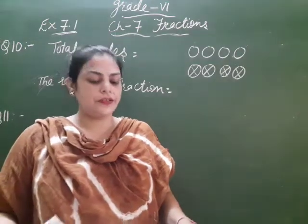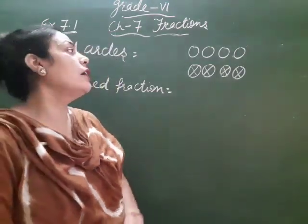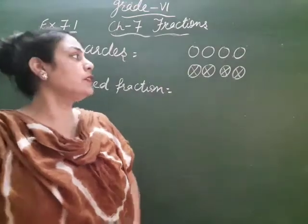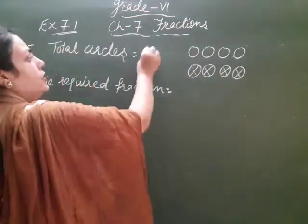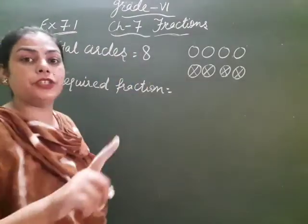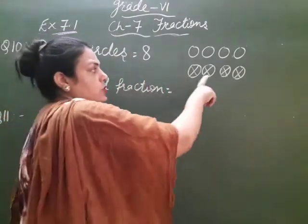Our 10th question is, write the fraction of the circles that have cross in them. You have given the picture. Where are these circles? Total circles are 8. So you have to write the fraction of the circles which have cross in them.